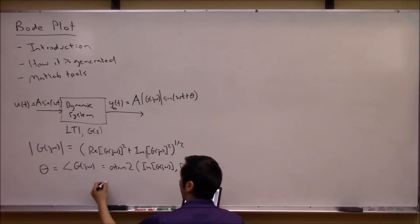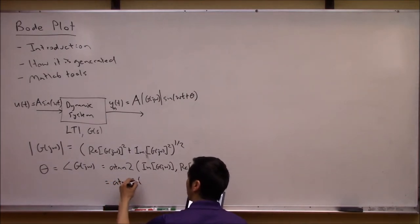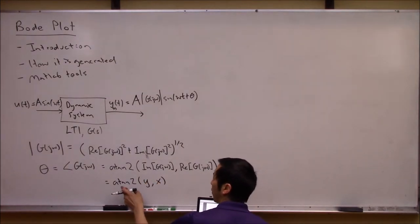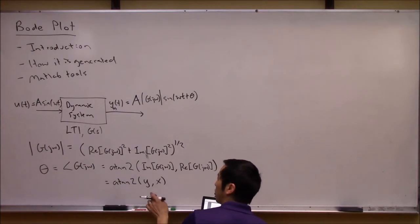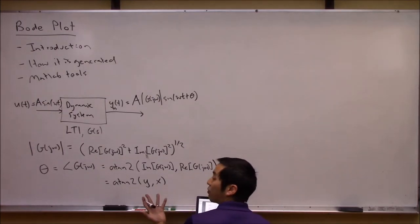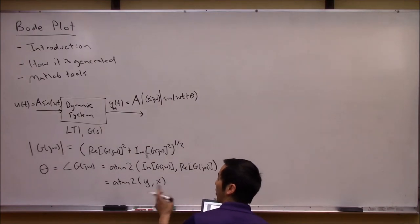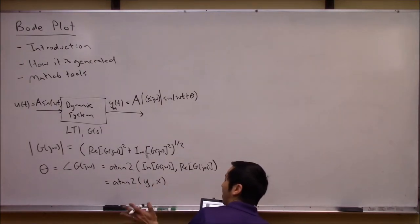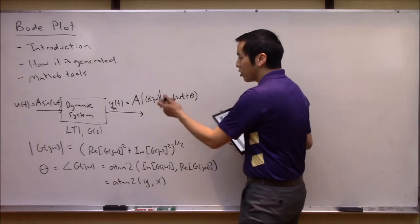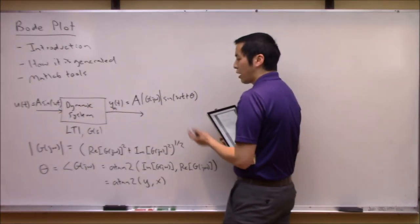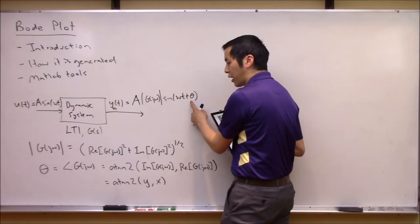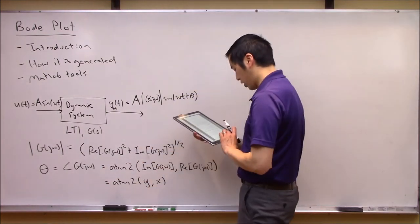A convenient way to write the angle is to use the atan2 function, giving it the imaginary part and then the real part of the complex number G(j omega). One thing to note: atan2 takes the y-component then the x-component in MATLAB, but Mathematica flips this around and wants the x-component first. So just check your software's convention. The key point is: you put in a sine wave, you get a sine wave coming out, but amplified by the magnitude of G(j omega) and phase shifted by this angle.